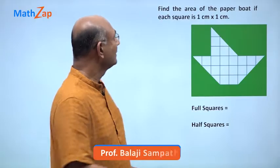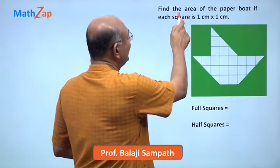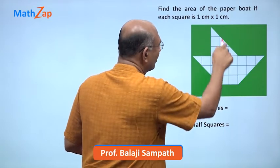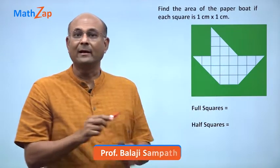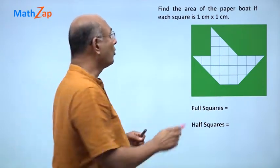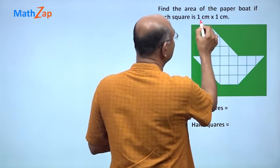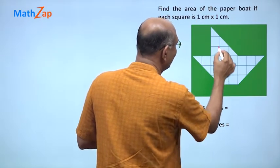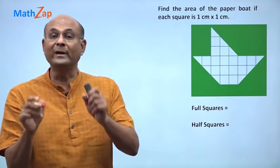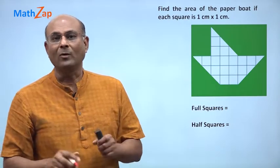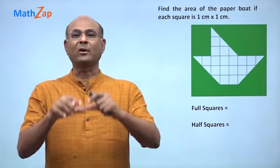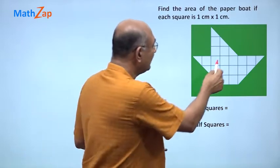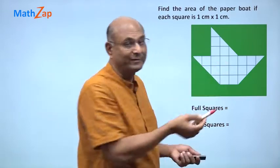In this question, we want to find the area of the paper boat — that is, the area inside it. Each of these squares is one centimeter by one centimeter, so that square is a unit square. Area is the number of unit squares inside.